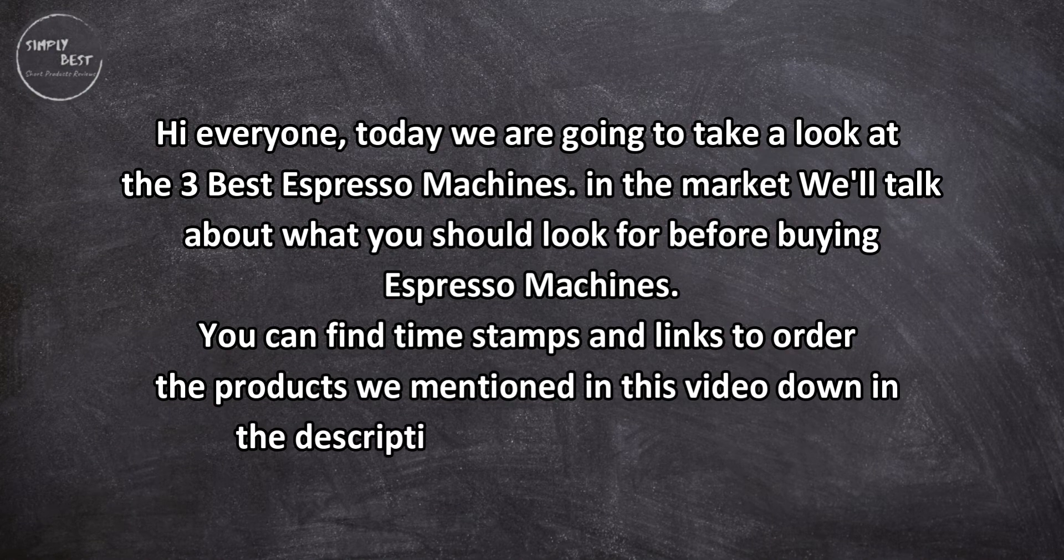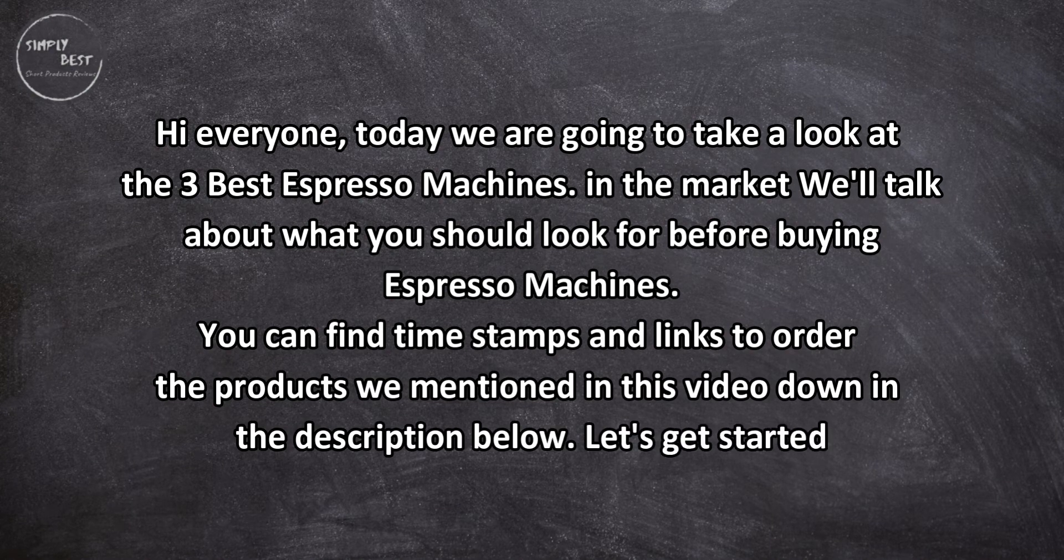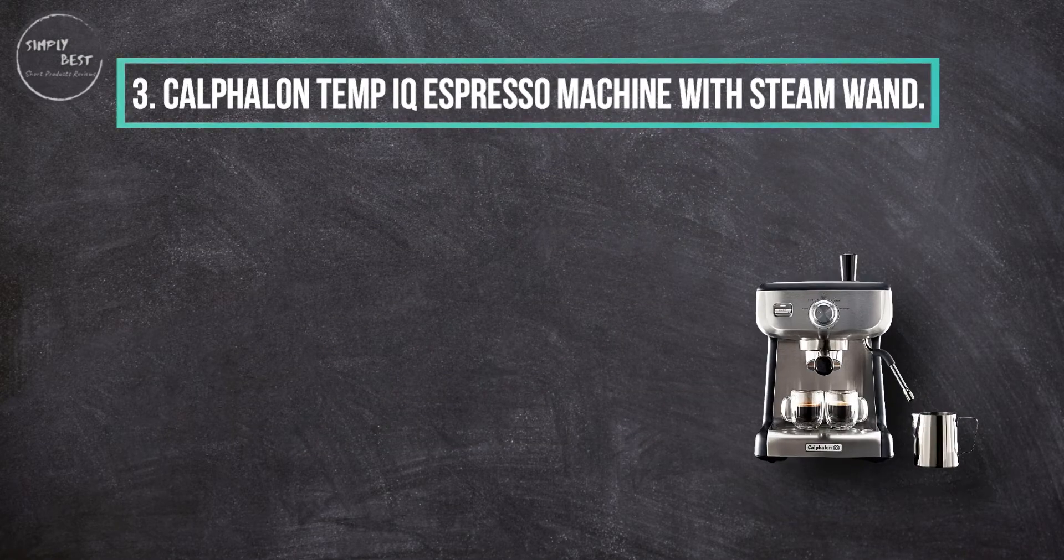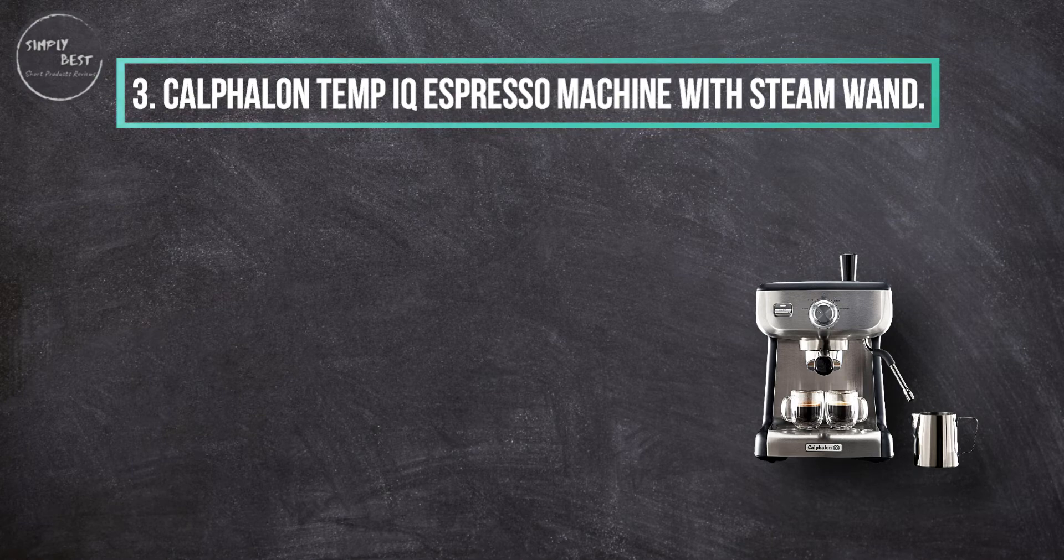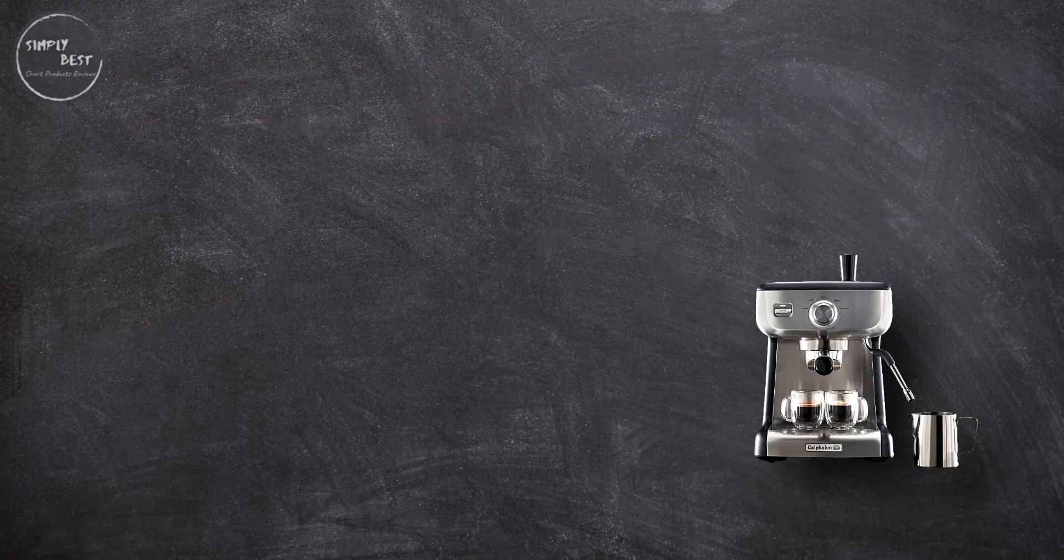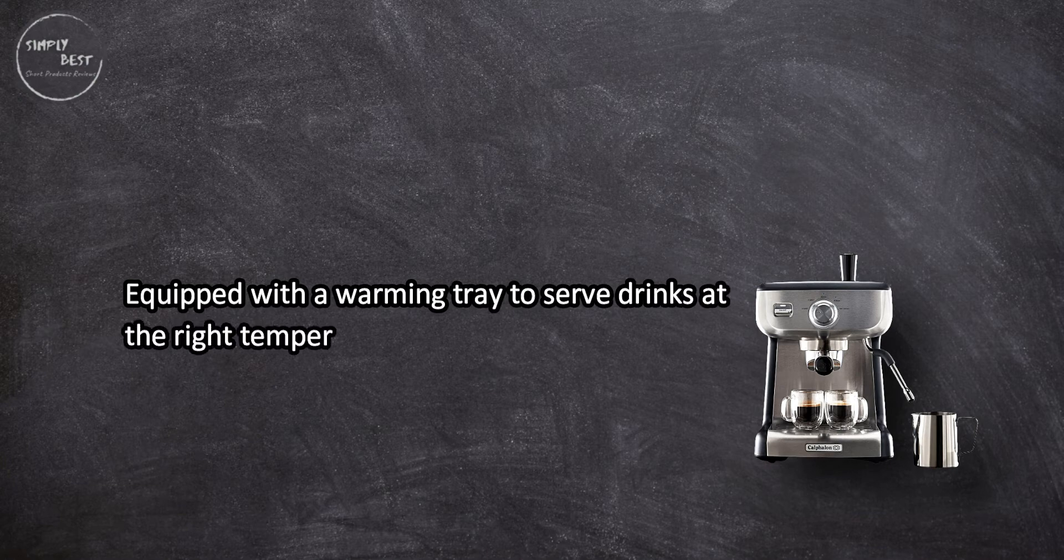Let's get started. At number three, Calphalon Temp IQ espresso machine with steam wand. Equipped with a warming tray to serve drinks at the right temperature, has an enlarged portafilter to adequately wet grounds to extract maximum flavor.